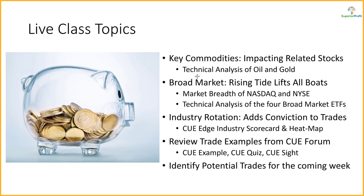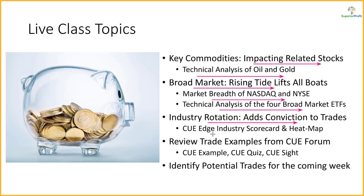As usual, we will analyze oil and gold using technical charts. They tend to impact related stocks. When we take swing trades, we like to align the trades with the broad market's direction, assessed using NASDAQ and NYSE market breadth and technical analysis of four broad market ETFs. We also try to align trades with industry strength or weakness, studied using industry scorecard and heatmap. We may also go through recent trade ideas shared in our traders forum or social network pages, and look for potential trades for the coming week.